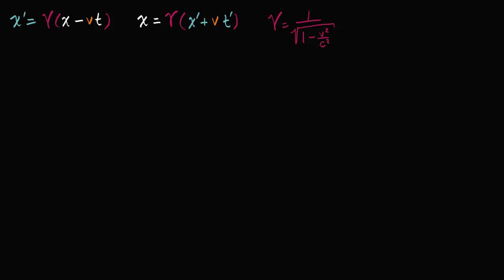We've made some good progress in our derivation of parts of the Lorentz transformation. We've been able to express x prime in terms of our Lorentz factor, x, v, and t, and we've been able to switch things around and represent x in terms of the Lorentz factor, x prime, v, and t prime, and we're able to solve for the Lorentz factor. Now the final missing piece in order for us to have the full transformation is to express t prime in terms of x and t. So how can we do that?